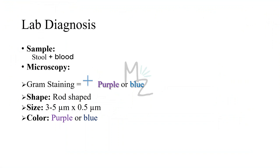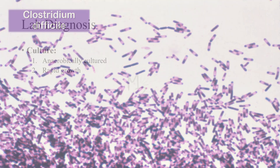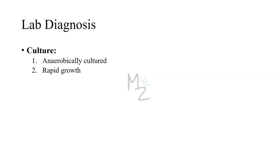Lab diagnosis requires a stool sample — liquid or semi-solid — to assess for neutrophils and blood. Gram staining reveals gram-positive purple-colored rods measuring 3–5 micrometers in length and 0.5 micrometers in width. The organism is usually not cultured, but when it is, it is cultured anaerobically and shows rapid growth on culture — visible as yellow spots and lines representing colonies.